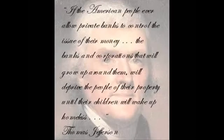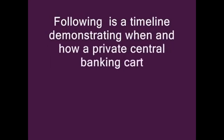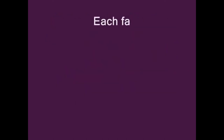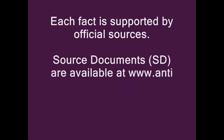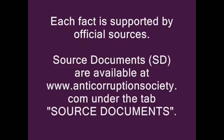If the American people ever allow private banks to control the issue of their money, the banks and corporations that will grow up around them will deprive the people of their property until their children will wake up homeless. — Thomas Jefferson. Following is a timeline demonstrating when and how a private central banking cartel got control of the government, the people, and the assets of the United States. Each fact is supported by official sources. Source documents are available at www.anticorruptionsociety.com under the tab 'source documents.'